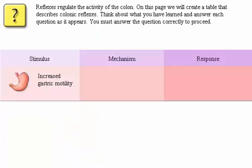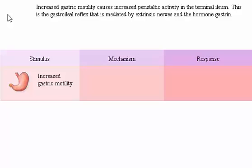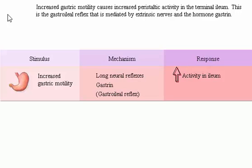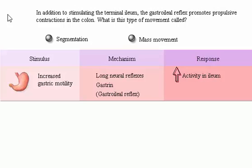Reflexes regulate the activity of the colon. On this page, we will create a table that describes colonic reflexes. We have learned that increased gastric motility causes increased peristaltic activity in the terminal ileum — this is the gastroileal reflex, mediated by extrinsic nerves and the hormone gastrin. In addition to stimulating the terminal ileum, the gastroileal reflex promotes propulsive contractions in the colon.